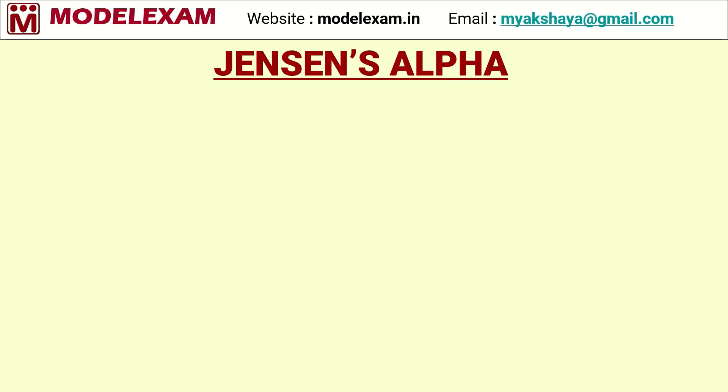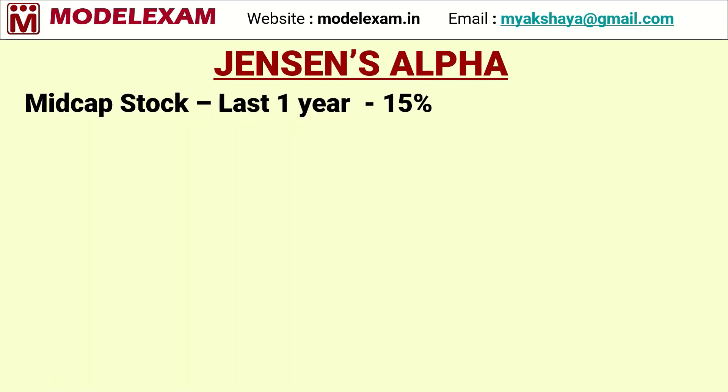Let us understand Jensen's alpha with an example. Let us consider a mid-cap stock over the last one year. Let us assume that it has given 15% return. The beta of the stock is 1.2.